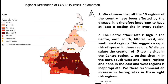Now that we are done with our map, let's use it to make some recommendations. First, we observe that all 10 regions of the country have been affected by the disease. It is therefore important to have at least a testing site per region.